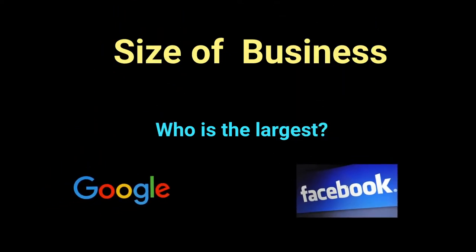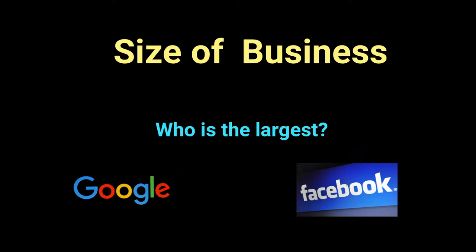Let's take an example. If I ask you to pick between two well-known companies — Facebook and Google — and ask you who is the largest, you will come up with different reasons. Some might say Facebook has more registered users, so it looks bigger. Others say Google is used by everyone. Some might say Facebook has more offices around the world, or that Google has more products to sell. So when comparing two similar businesses to figure out which is larger, it's very difficult to find one point of reference.